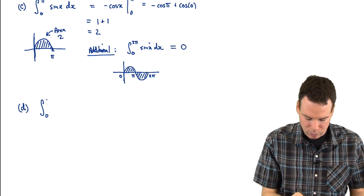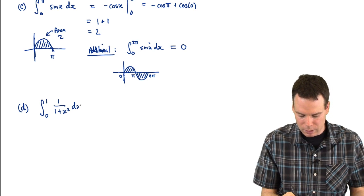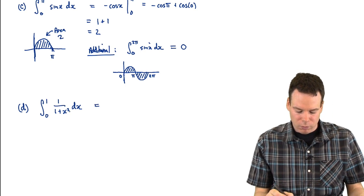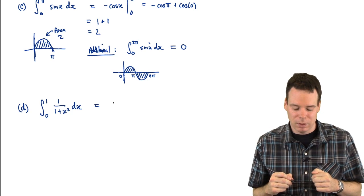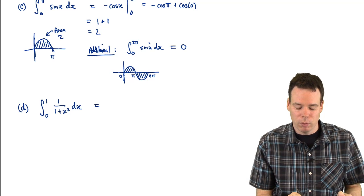What about the next one? The integral from 0 to 1 of 1 over 1 plus x squared dx. We need to know an antiderivative of 1 over 1 plus x squared. Again this is where it really is important to know your derivatives from differential calculus to have them at your fingertips. What function has a derivative of 1 over 1 plus x squared?